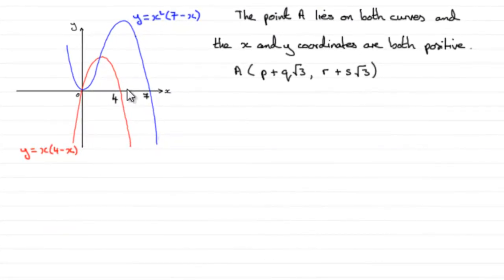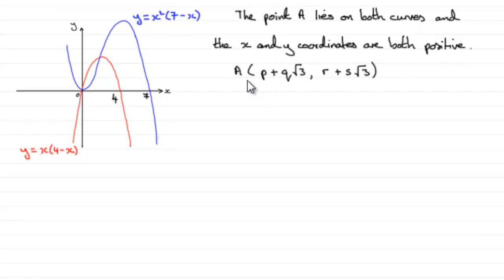In this part, we're told that there's a point A that lies on both curves, and the x and y coordinates are both positive. What we've got to do is express the coordinates of A in the form P plus Q root 3 and R plus S root 3, where P, Q, R and S are integers.